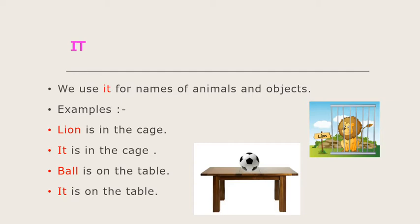For example, lion is in the cage. So, instead of lion, we will use the word 'it.' It is in the cage. Next sentence: Ball is on the table. Ball is a thing, an object. So, just to replace ball, we will use the word 'it.' It is on the table.